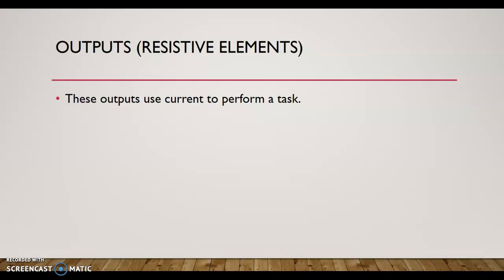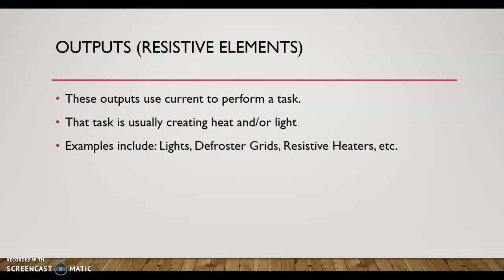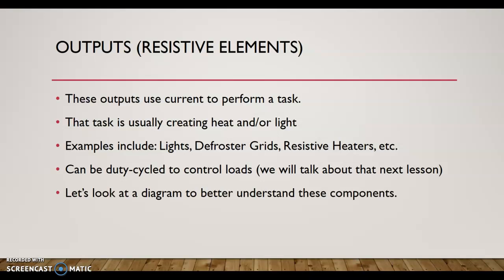The other output I'm going to talk about is resistive elements, and this again is a broad category. These outputs use current to perform a task that's different than electromagnetism. That task is usually creating heat and/or light. Examples include lights, defroster grids—think about on your rear window—resistive heaters like electric vehicle. You can run current through a resistive PTC heater that's going to create heat, just like the defroster grid. These can be duty-cycled to control loads, and we'll save that for next lesson.